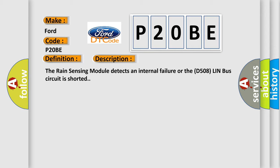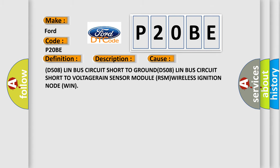This diagnostic error occurs most often in these cases: D508 LIN bus circuit is shorted to ground, D508 LIN bus circuit short to voltage, rain sensor module RSM, or wireless ignition node WIN.